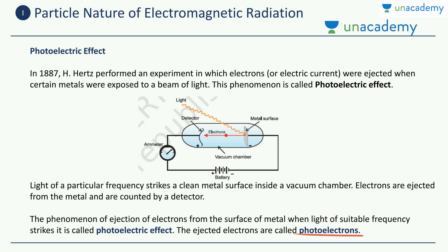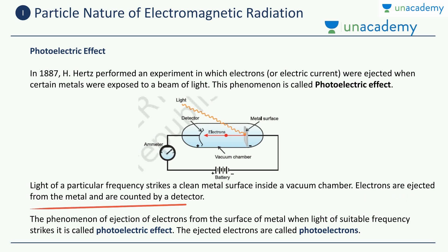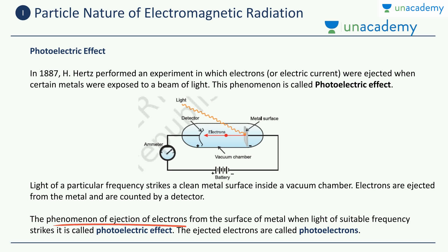The ejected electrons are known as photoelectrons. Light of a particular frequency strikes a clean metal surface inside a vacuum chamber. The electron ejects out, and there is an ammeter connected to the circuit to measure the current. Electrons ejected from the metal are counted by a detector — for example, an ammeter can measure the amount of current flowing through the circuit. The phenomenon of ejection of electrons from the surface of a metal when light of suitable frequency strikes it is called the photoelectric effect, and these ejected electrons are called photoelectrons.